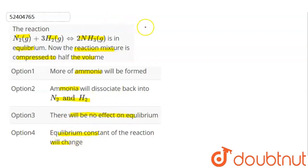If we see this reaction, N2 plus 3H2 gives 2NH3, the gaseous moles here are 2, and here gaseous moles are 4.